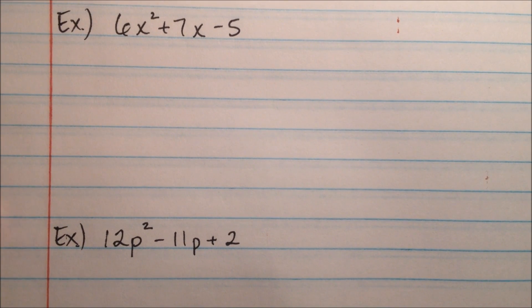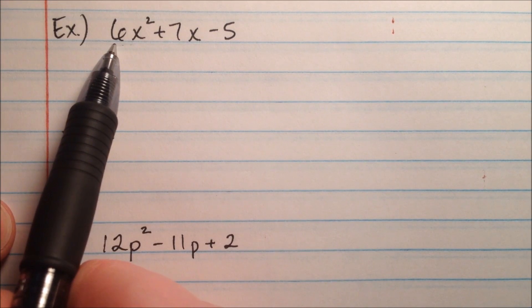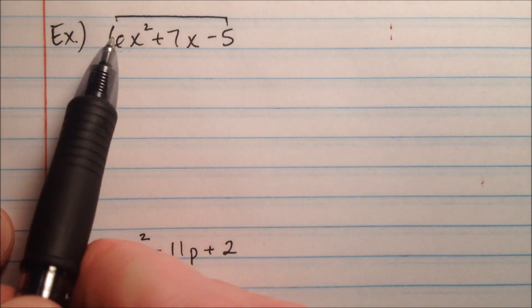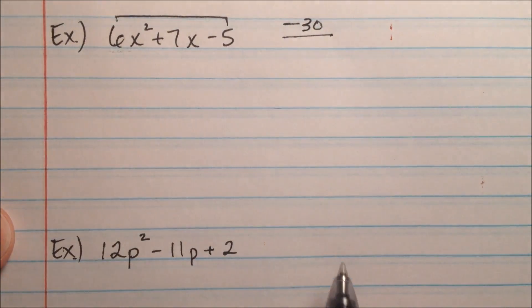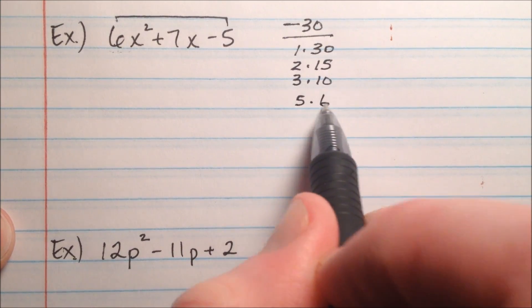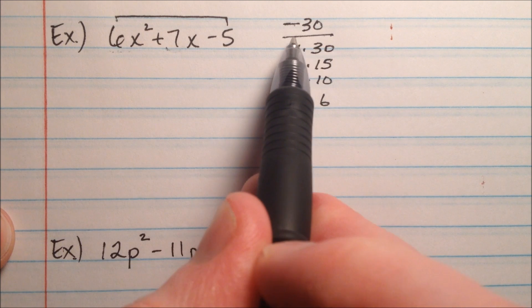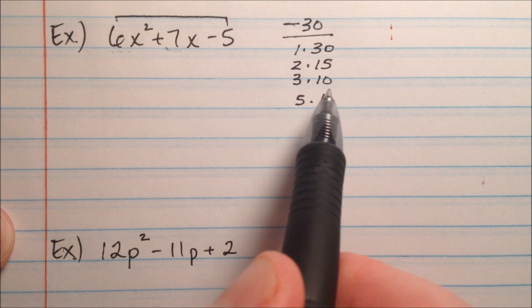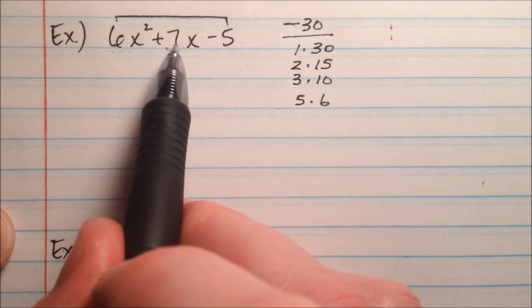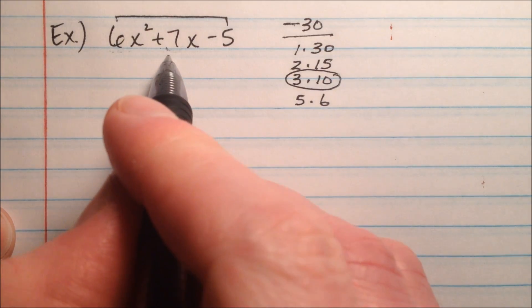The next example is 6x² + 7x − 5. Notice the leading coefficient is 6, not 1, so we use the AC method again. We multiply 6 by negative 5 to get negative 30. We want factors of 30 — which are 1×30, 2×15, 3×10, 5×6 — that multiply to make negative 30 and add to make positive 7. Since the product is negative, one factor is positive and one is negative. That gives us negative 3 and positive 10.